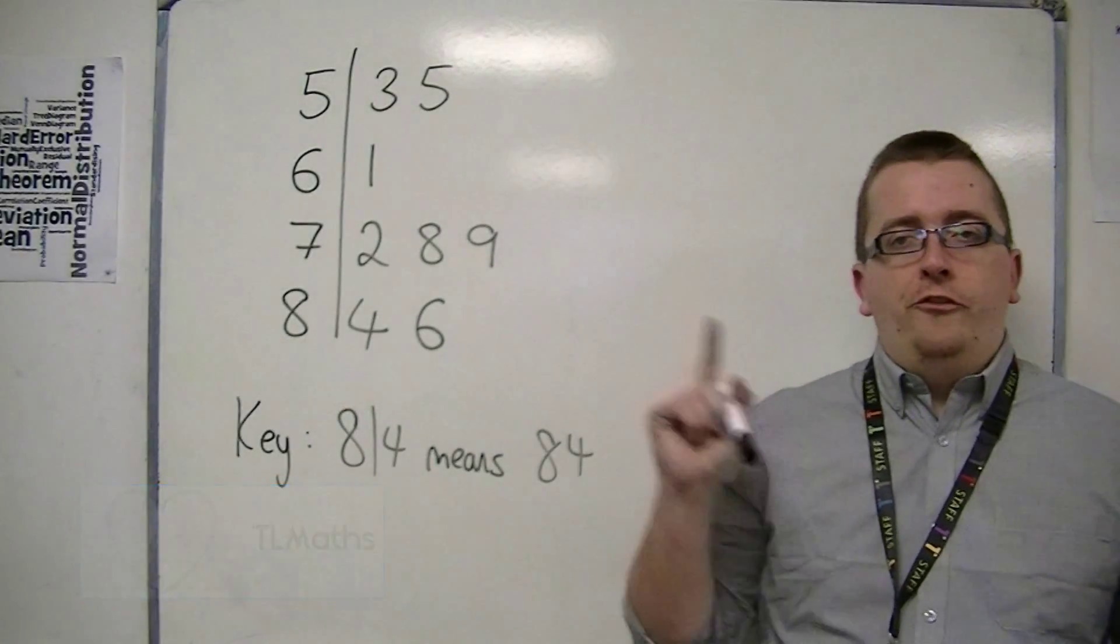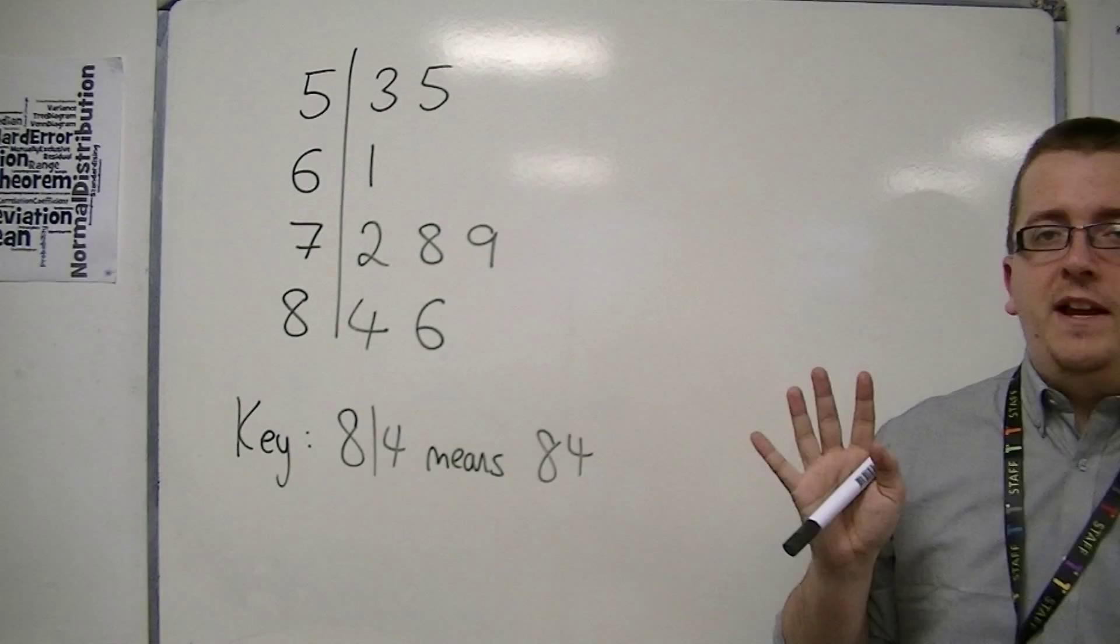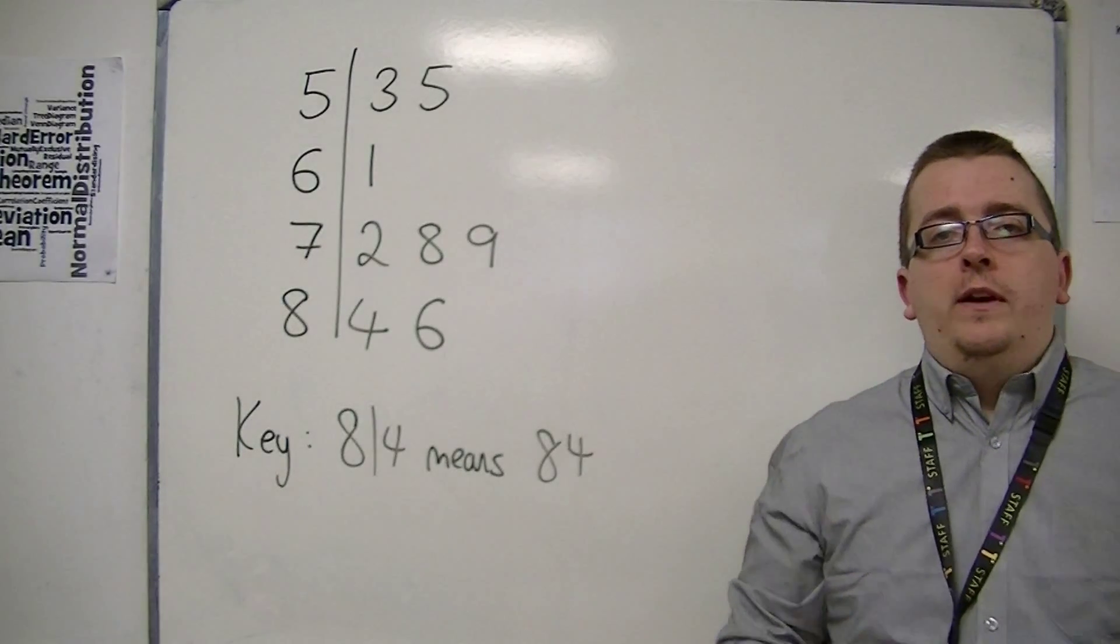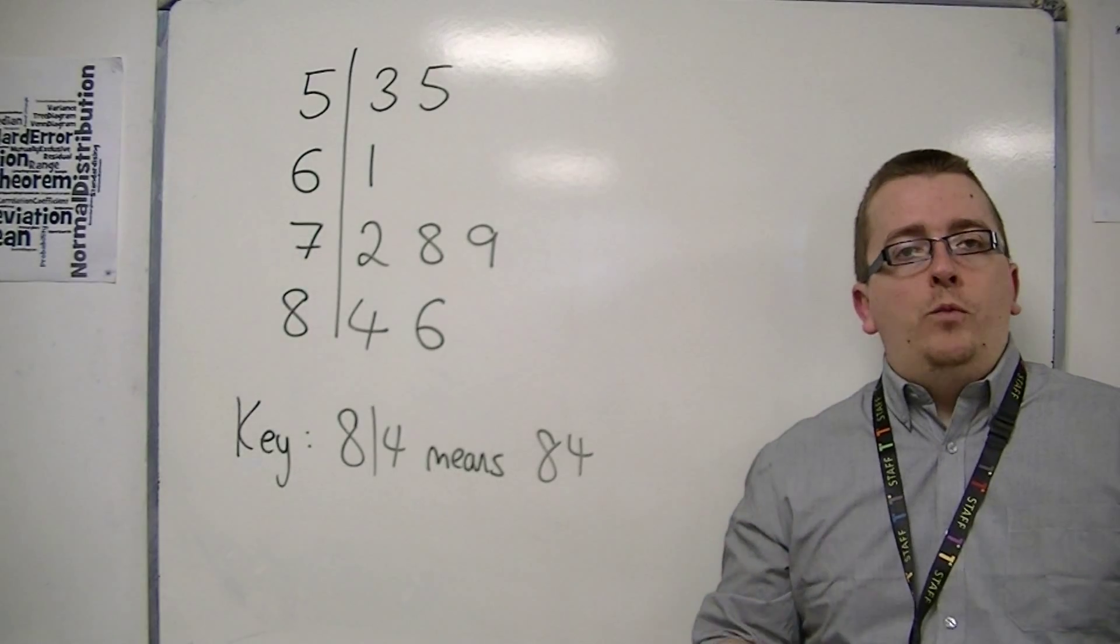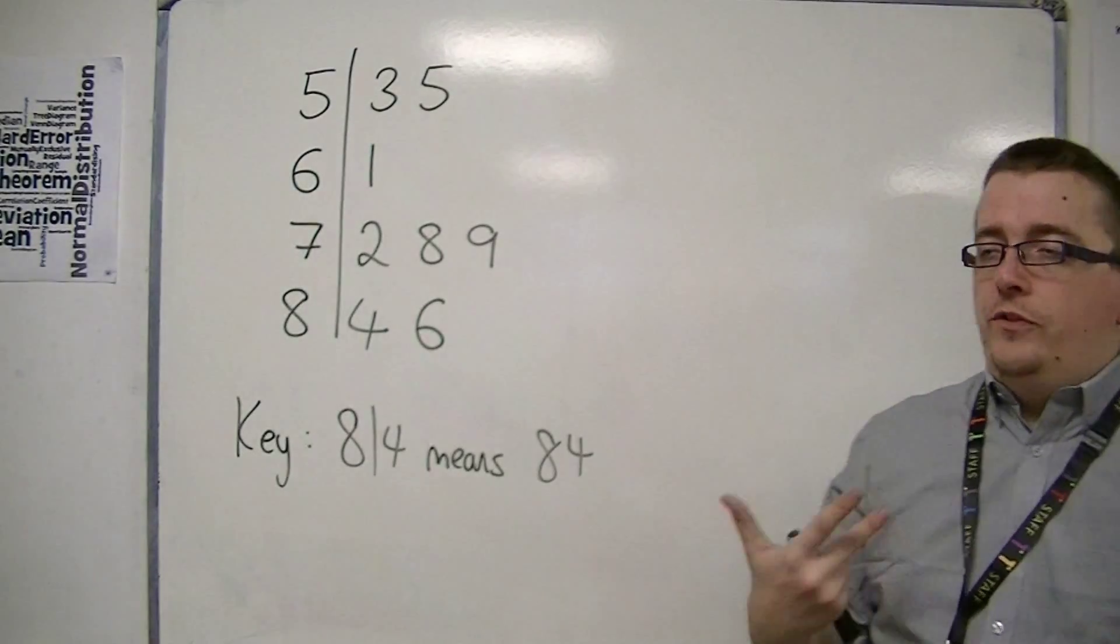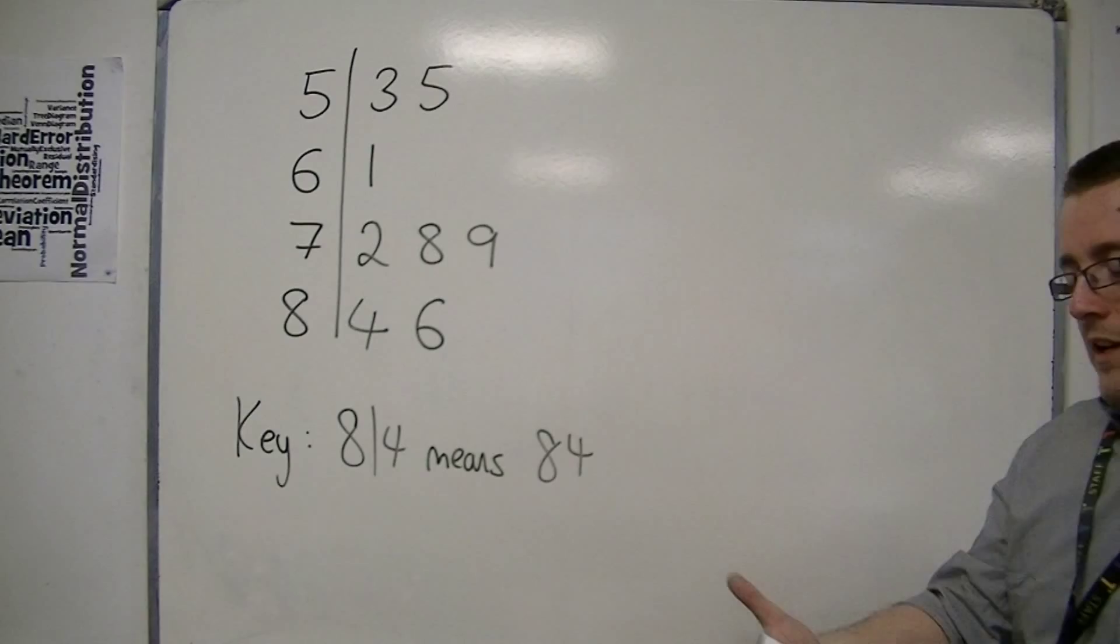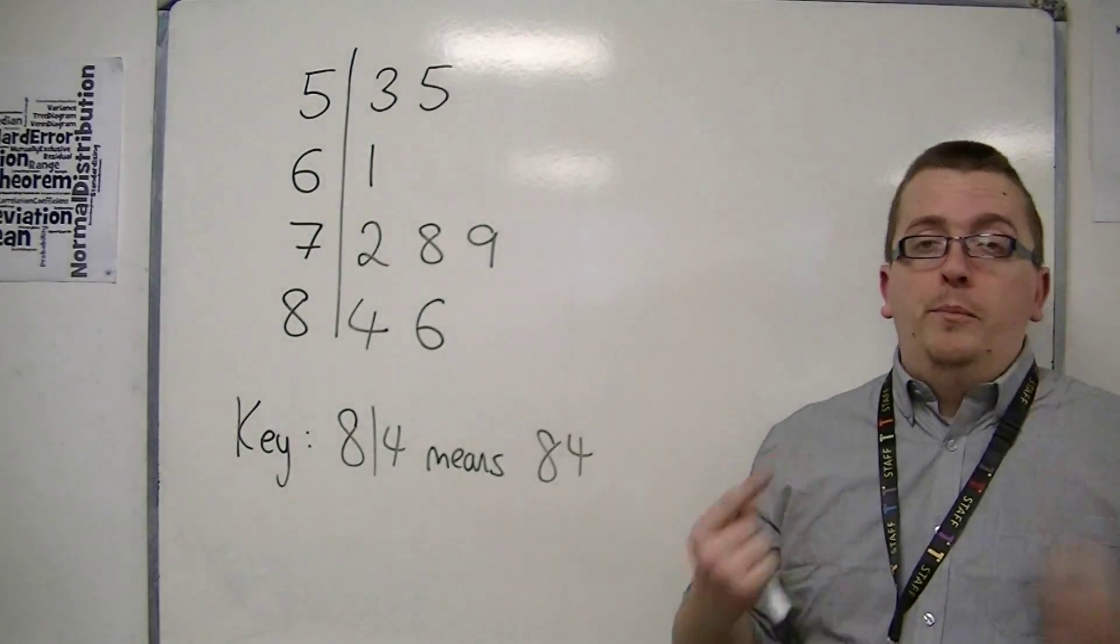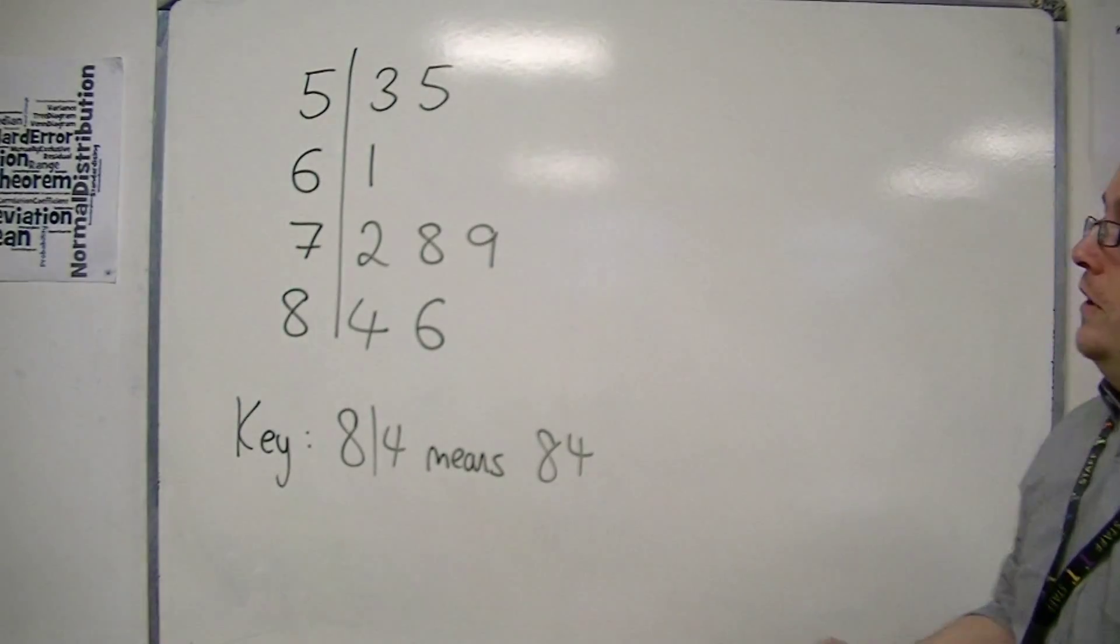Here is a stem and leaf diagram from which I'm going to calculate the mean. Now, of the three averages, the mean is going to be the least likely one that you're going to meet when you're dealing with stem and leaf diagrams. And that's because it's quite cumbersome to use and find.